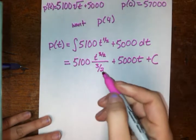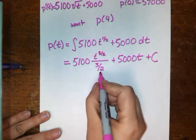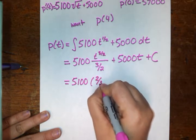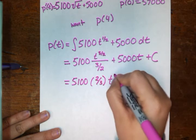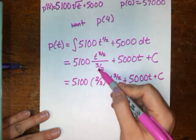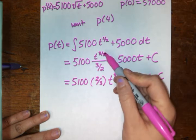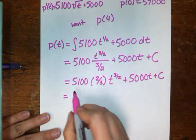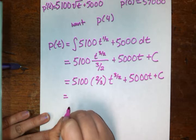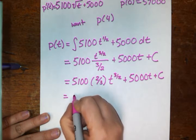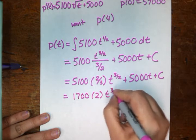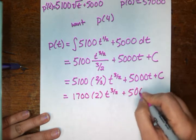So we've got the rough idea here. Let's go ahead and simplify this. So that's going to give us, let's see, 5,100 times two-thirds times t to the three-halves, plus 5,000t plus c. What I did is, to get rid of this fraction in the denominator, I'm just going to bring it up, flip it, and multiply. So that is going to give us, let's see, 51 divided by three, that's going to be 17.